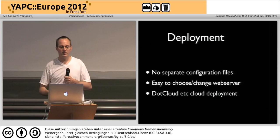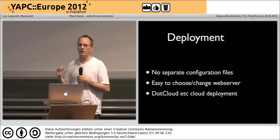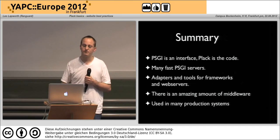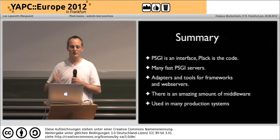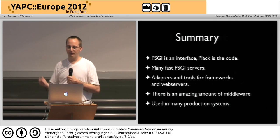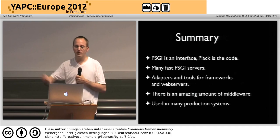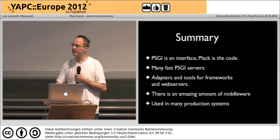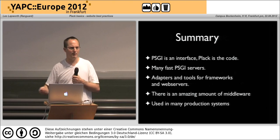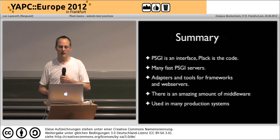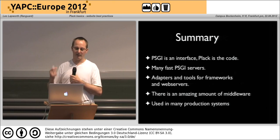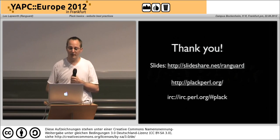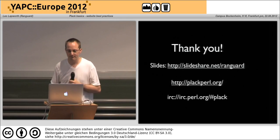There are lots of companies like dotCloud and various others that allow you with one command to deploy your PSGI-compatible application onto their web servers. In summary: PSGI is the interface, Plack is the code and toolkit, there are lots of fast PSGI web servers, adapters and tools for most of the major Perl frameworks — in fact I'm unsure of any that don't use it these days — and there's an amazing amount of middleware, all being used in a lot of production servers within the Perl community. So I suppose really I just say: use Plack.